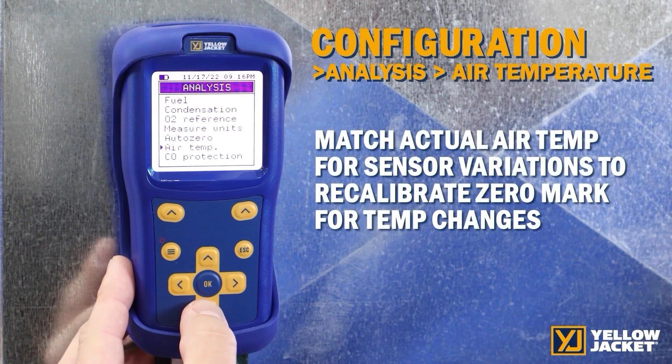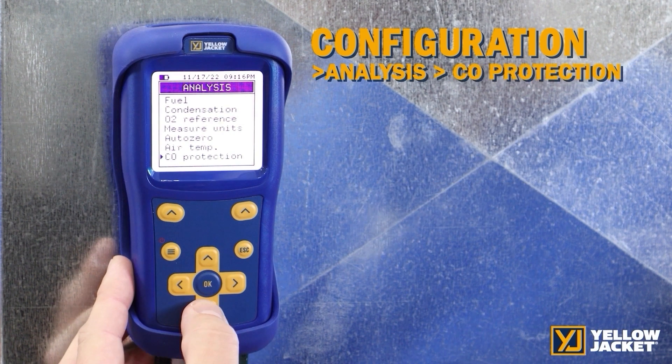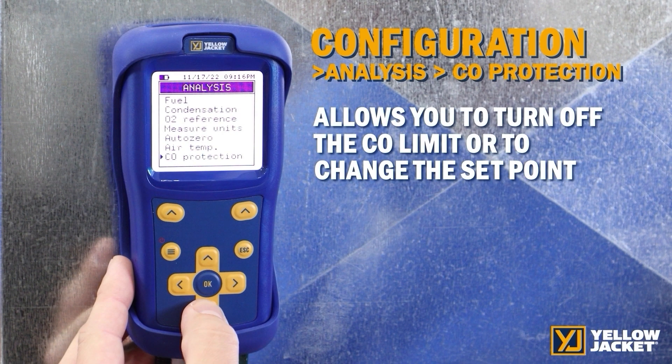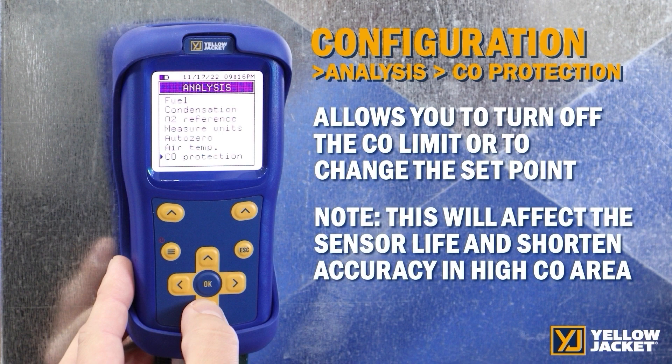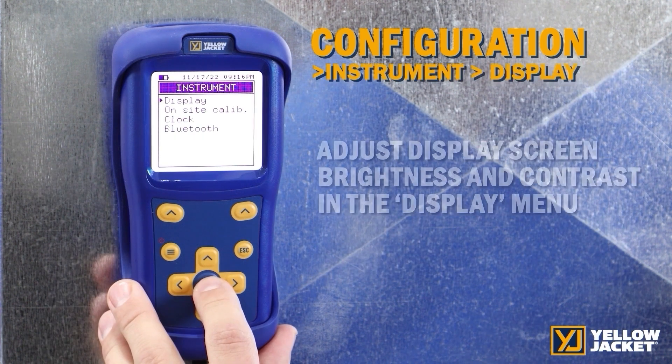Air temp allows you to match the actual air temp sensor variation to recalibrate the zero mark for temperature changes. CO protection allows you to turn off the CO limit or to change the set point. Changing this will affect sensor life and shorten accuracy if used in a higher CO area, as the protection of the device is lowered and more CO is allowed into the sensor.